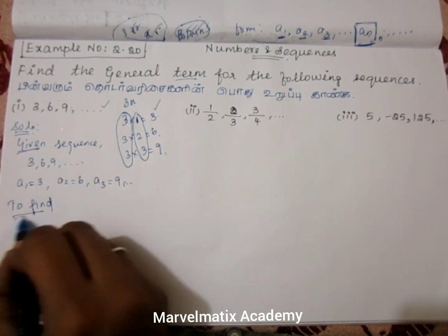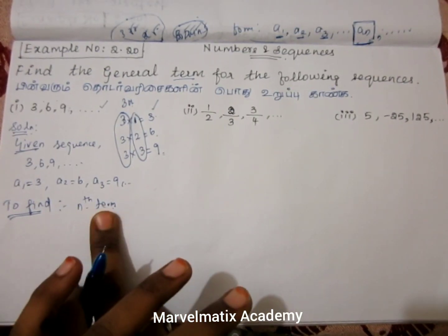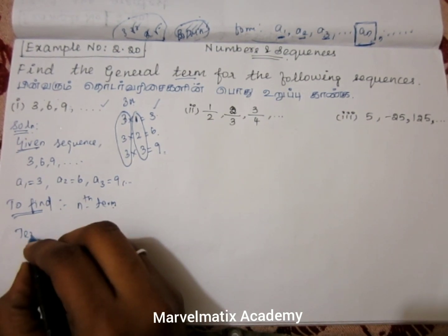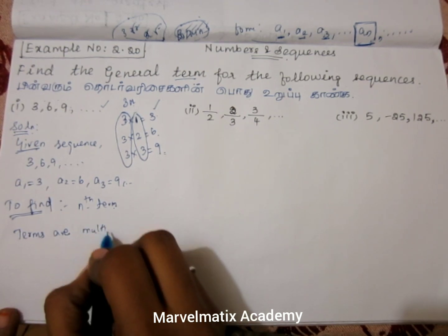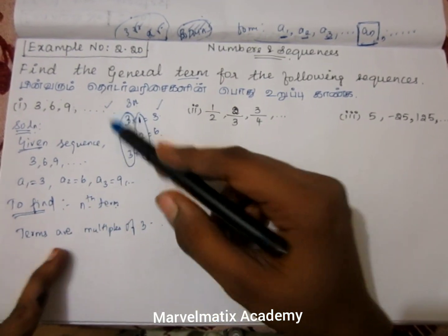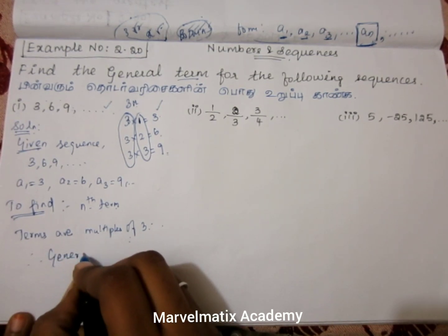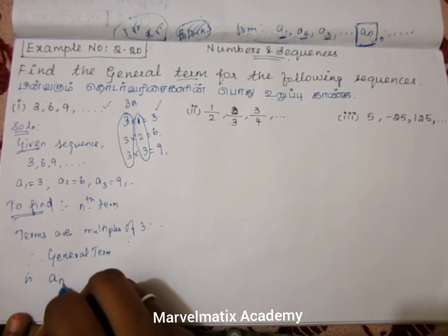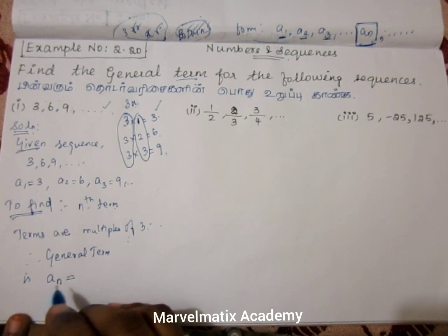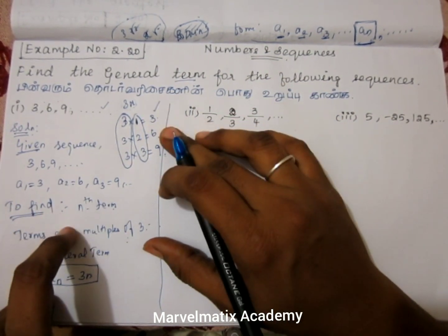To find: the general term. So the general term — we denote it as a(n). A(n) equals 3×n, so a(n) = 3n. That is the general term for this sequence.